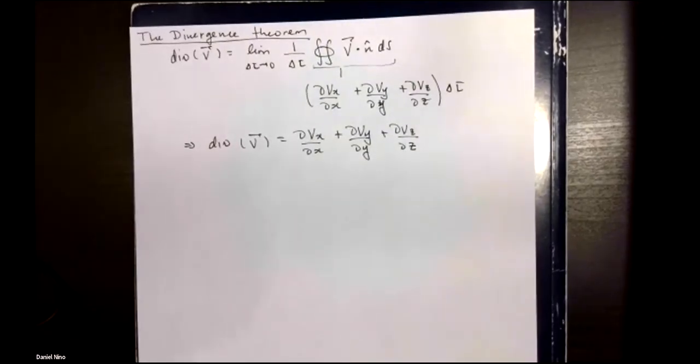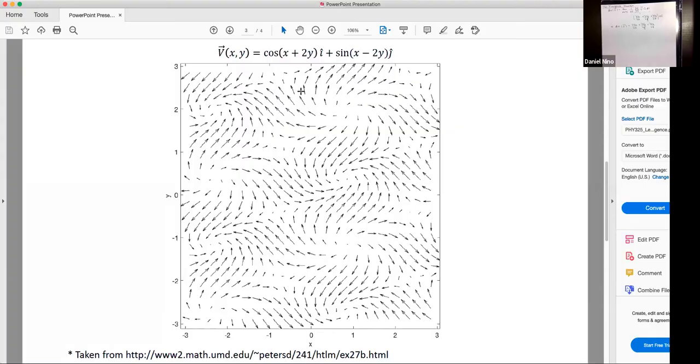Before getting into the details of the divergence theorem, I'd like to show you an example of what this looks like. Over here we have a vector field, cosine of x plus 2y in the i hat direction and sine of x minus 2y in the j hat direction, and it results in a vector field that looks something like that.